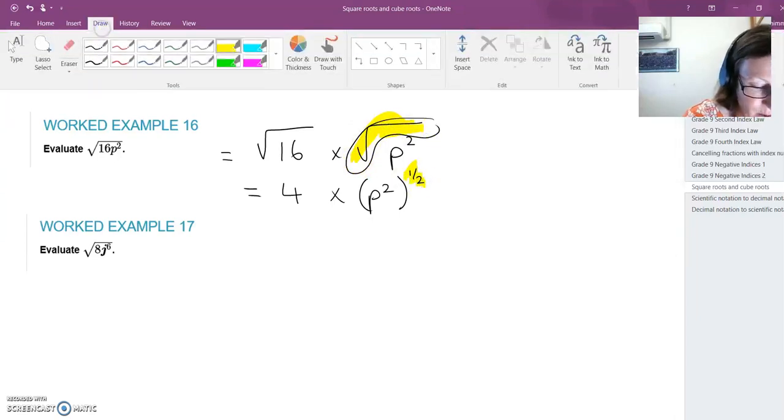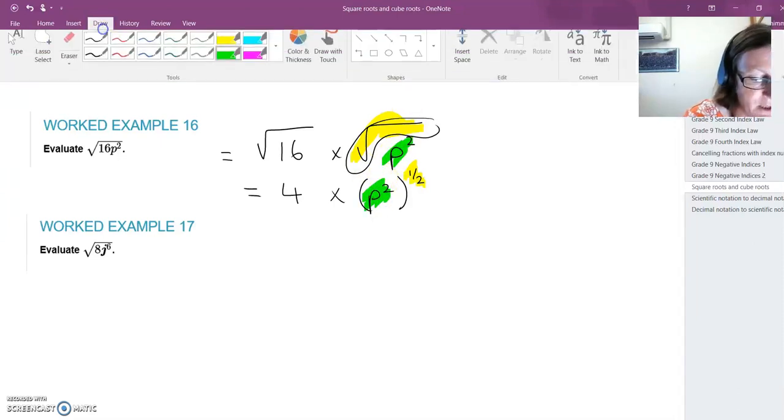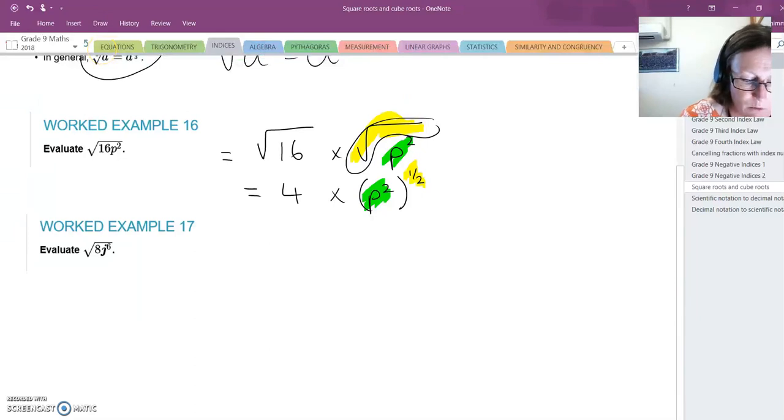My p² is still there, and instead of having the square root sign, we've changed it to an index of a half. Now look what we can do here. Index law 4 says power to a power, we times those. So two times a half is one, so it's p to the power of one. In other words, the answer is 4p.